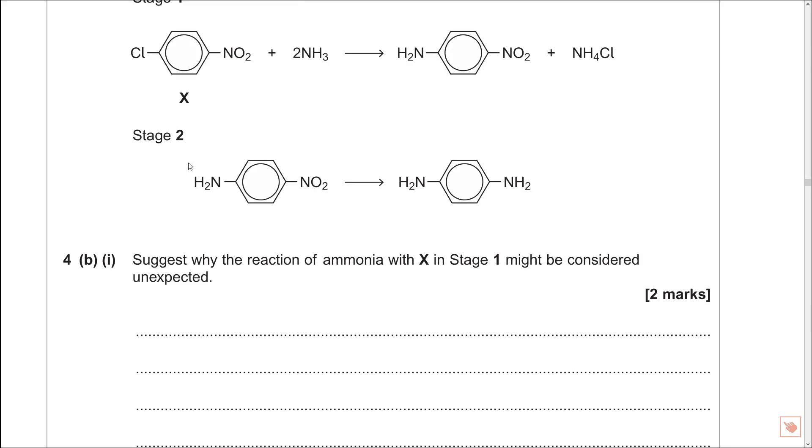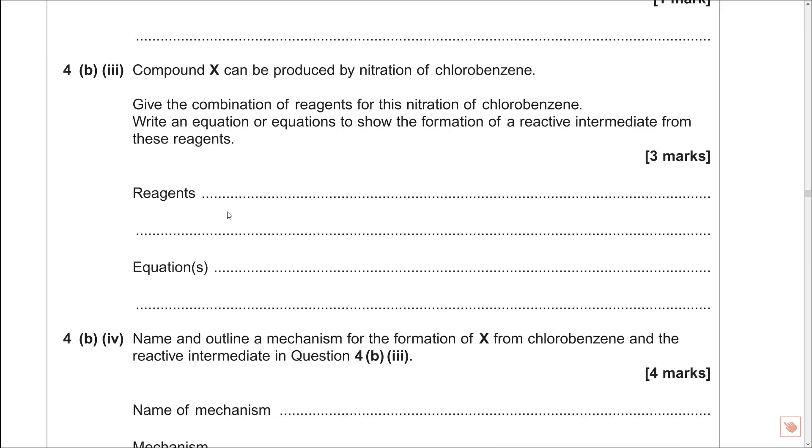It is essentially saying, right, what do you initially do to make the intermediate? Well that is the electrophile, and that is our, reagents wise, that is going to be our conc HNO3 and conc H2SO4. Important that you have the conc, or you can write the whole word concentrated if you want. In terms of equations, I am just going to go one equation. And that is going to be HNO3 reacting with H2SO4. Now I can remember that this is balancing like that. My NO2+, two HSO4-, and my H3O+, as well. And there you go. Three marks. One, two, three. Easy.